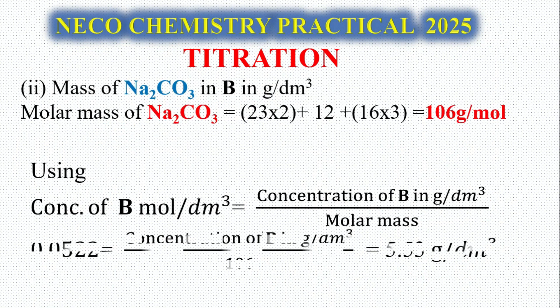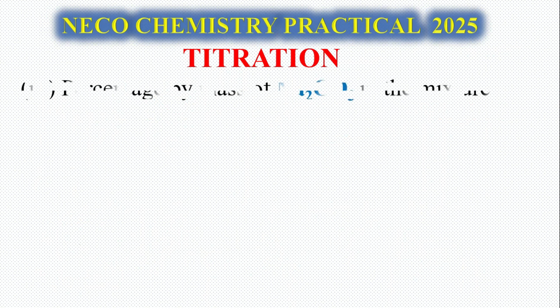Question number 2: Mass of Na2CO3 in grams per dm³. Let's calculate the molar mass, which is 106 grams per mole. Using concentration in mol per dm³ = concentration in g per dm³ / molar mass, so 0.0522 mol per dm³ times 106 equals 5.53 grams per dm³ of B.